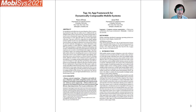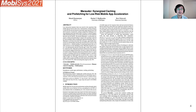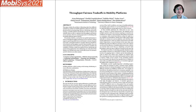The first paper is TAP, an App Framework for Dynamically Composable Mobile Systems, and the topic is how to enable a more seamless experience when using multiple devices. The second paper is Marauder: Synergized Caching and Prefetching for Low-Risk Mobile App Acceleration, and the topic is how to alleviate network latency to make mobile apps more responsive. The third paper is Throughput Fairness Trade-offs in Mobility Platforms, and the topic is how to match user requests to available workers for gig economy apps such as Uber, DoorDash, etc. With these three papers, I'd like to go over their topics and discuss what they are, what their challenges are, and what kinds of solutions there are.